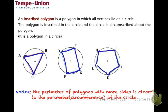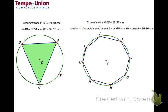To make the point more concrete, here are some numbers. The perimeter of the triangle is 32.18 and the circumference of the circle is 39.30 — a bit off. But for an octagon inscribed in that same circle, the perimeter is 38.24 compared to the circumference of 39.30 — super close. As you increase the number of sides, the perimeter gets closer and closer to the actual circumference.